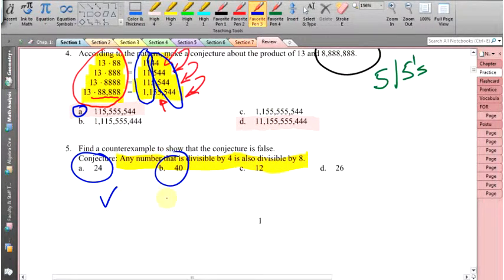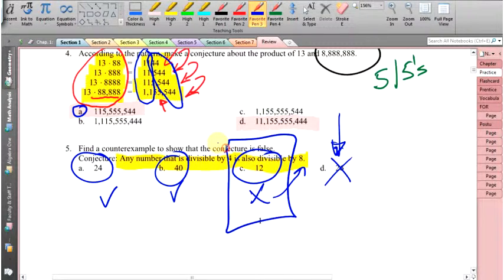40. Well, 40 is divisible by 4 and it's also divisible by 8. That doesn't seem like a counterexample. But this one here, it's divisible by 4 but it's not divisible by 8. And so let's take a look at the last one here to make sure that one's not it. Well, this one's not even divisible by 4 so it doesn't even qualify. So it has to be C.